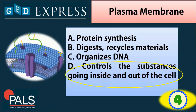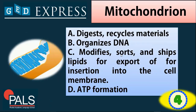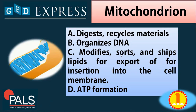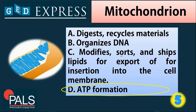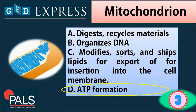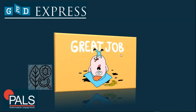Next we have the mitochondrion. What is the function? A. Digests and recycles materials, B. Organizes DNA, C. Modifies, sorts, and shapes lipids for export or insertion into the cell membrane, or D. ATP formation. The answer is D — ATP, known as adenosine triphosphate, serves as energy for the cell. That ends the assessment part. Great job!